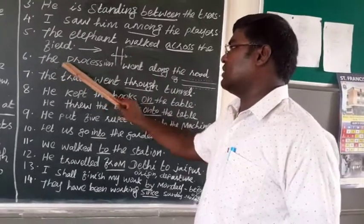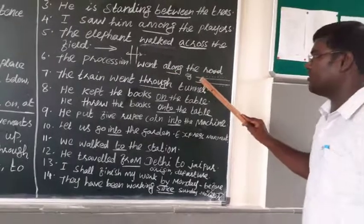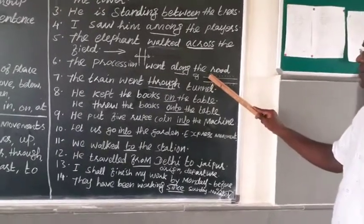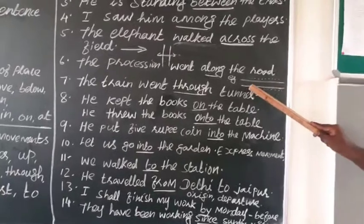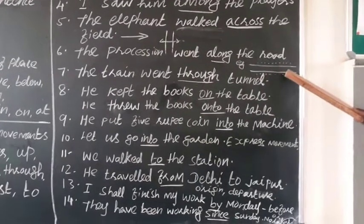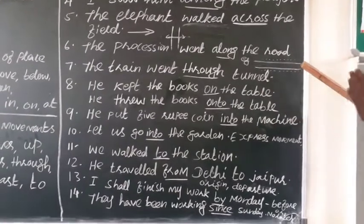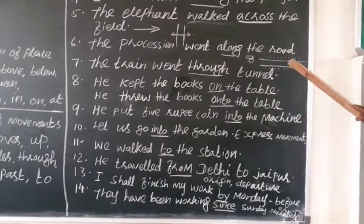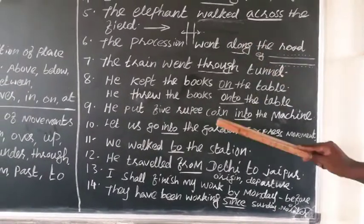Next, we got, the procession went along the road. Along the road, you see the feature here. These are road, and then this side you go. Along means, that side you go. Means, close to the road, you keep on walking. That is called along.